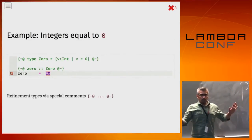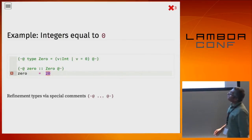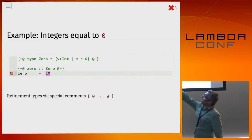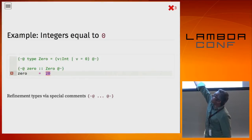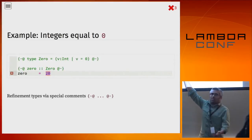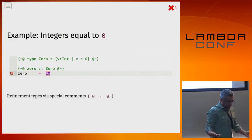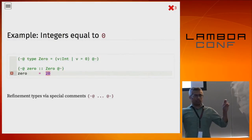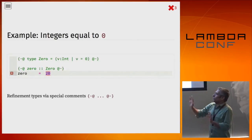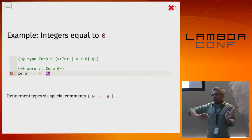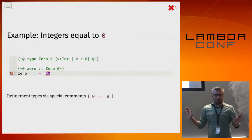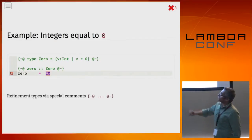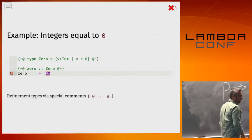A lot of things are of type Zero. For example, 1 minus 1 is also of type Zero. What happens underneath is I get the expression '1 - 1' and throw it at the SMT solver. We ask: I have a value equal to 1 minus 1 — does that imply the value is equal to 0? The SMT solver says yes, of course. So we don't get the error.